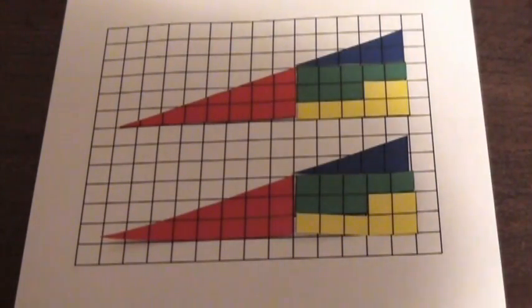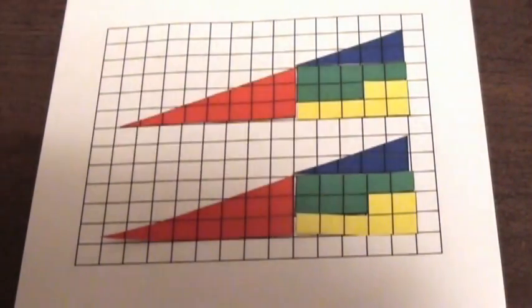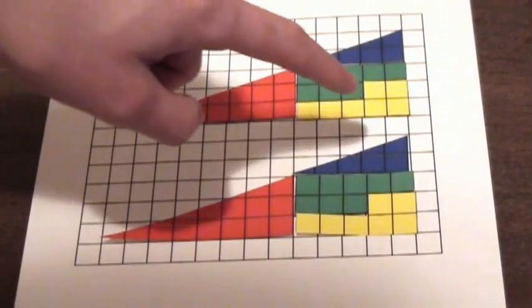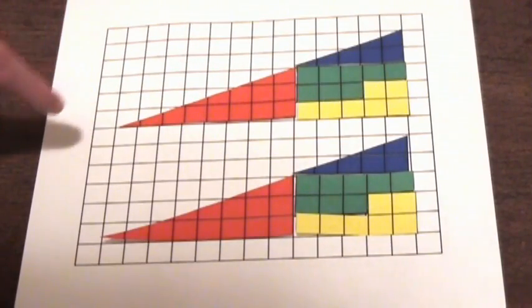Okay, what we have here is an interesting experiment. We have four color-coded shapes arranged in the form of a triangle, a triangle that is five squares in height and thirteen squares in length.